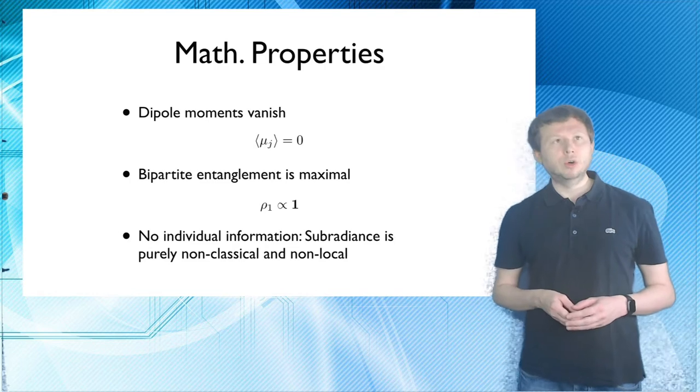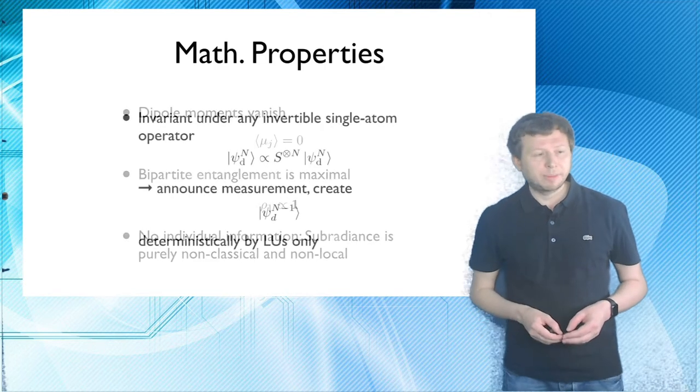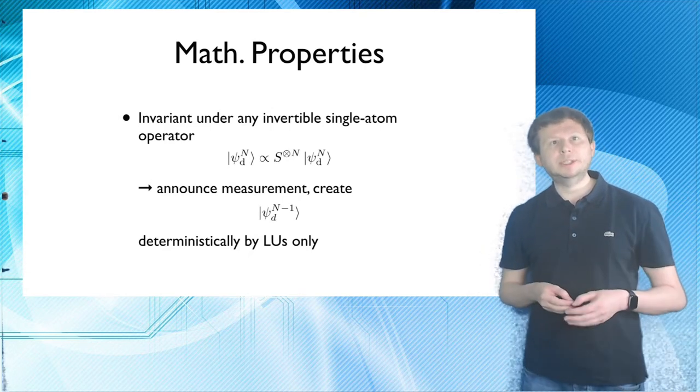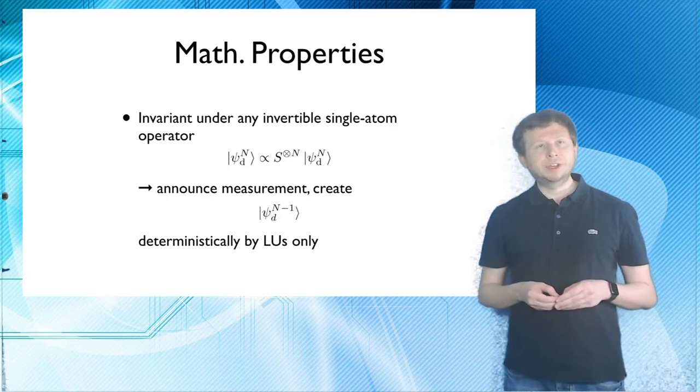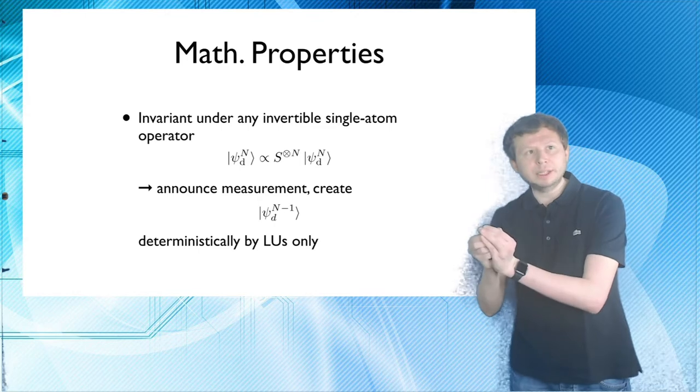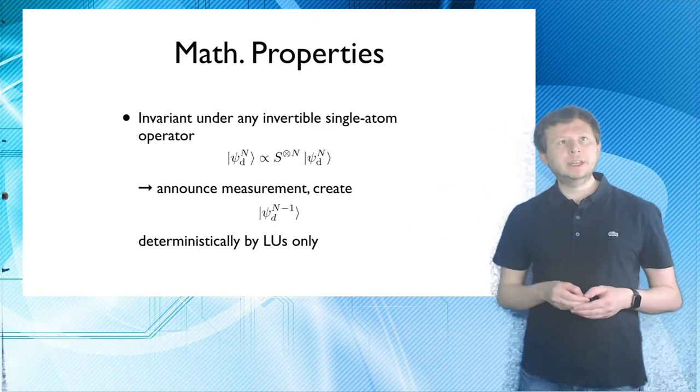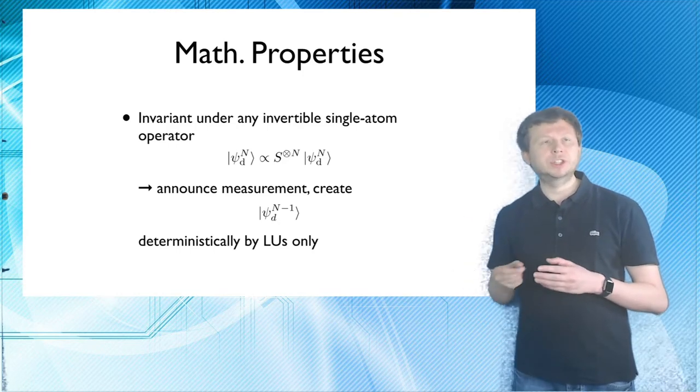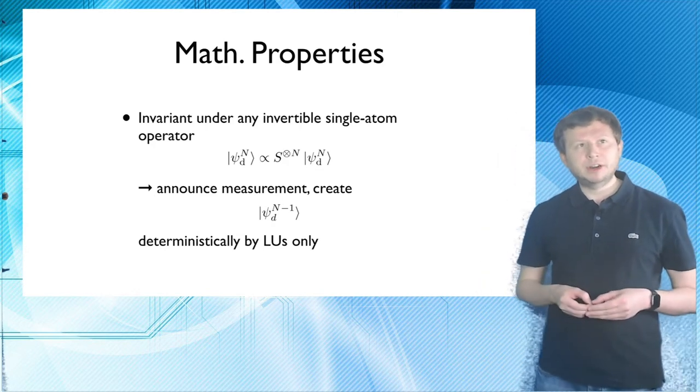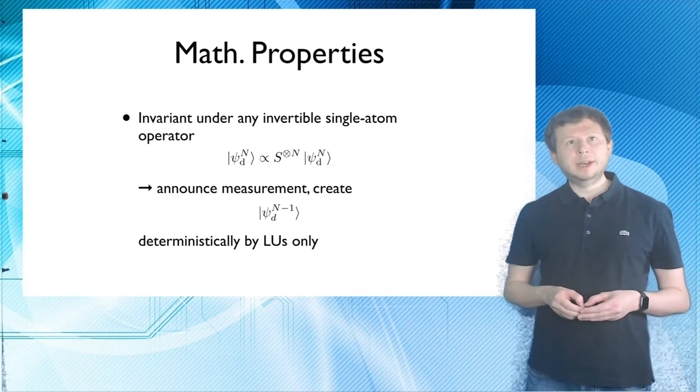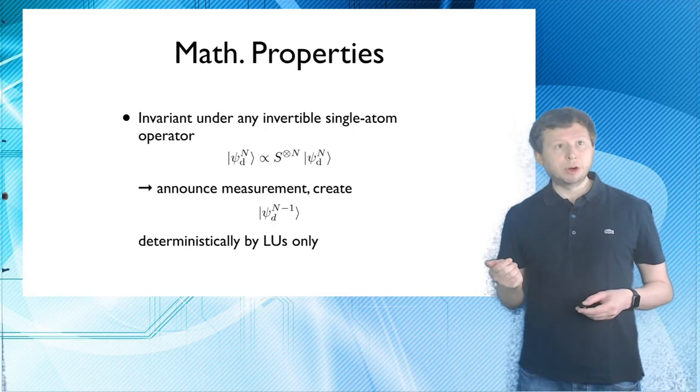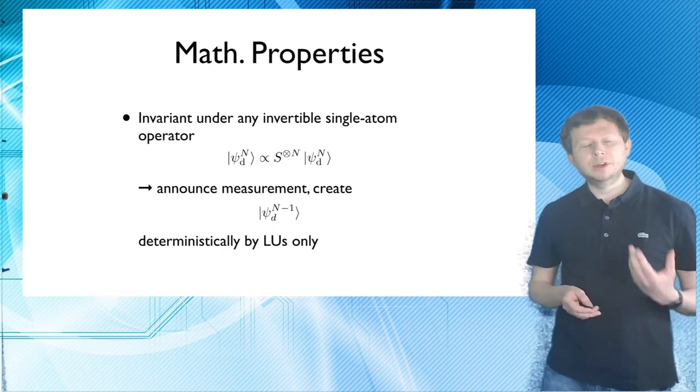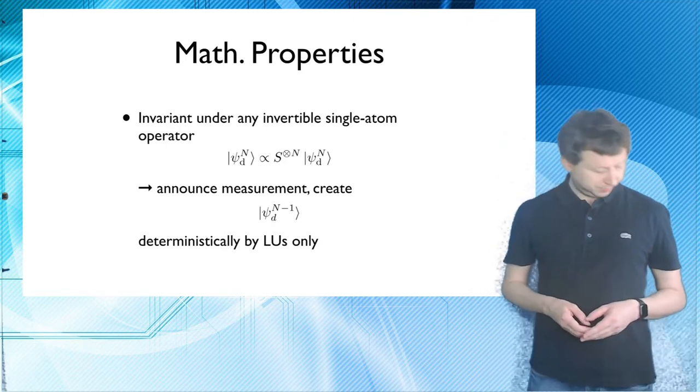And this means that there is no individual information stored in the single emitters and therefore subradiance is a purely non-classical and non-local phenomenon. Next up, this state is completely invariant under all invertible single particle operations. So this means that you can take a measurement on one single particle, announce the result of the measurement and then deterministically transform the state to psi d n-1. So you've basically lost this one particle. And you can do this with local unitary operations only. And this makes it an ideal resource for the Byzantine agreement problem, the n-strangers problem, the secret sharing problem, the liar detection problem and many, many other quantum information applications.